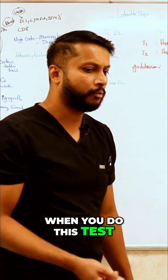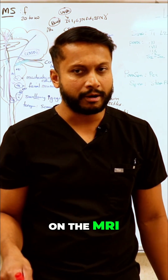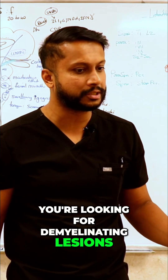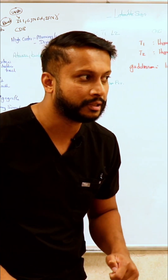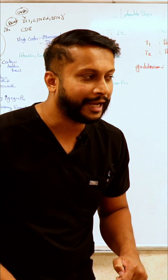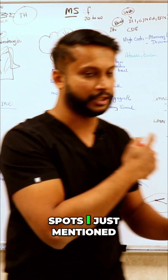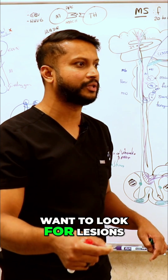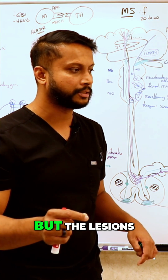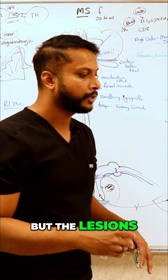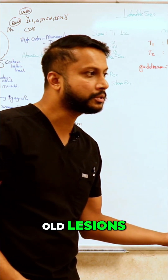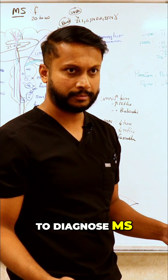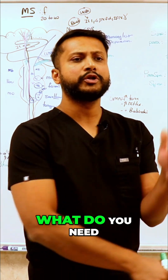When you do this test, what are you looking for on the MRI? You're looking for demyelinating lesions in the four specific spots mentioned. Those are the four spots where you want to look for lesions. You need to have both old lesions and active lesions in order to diagnose MS.